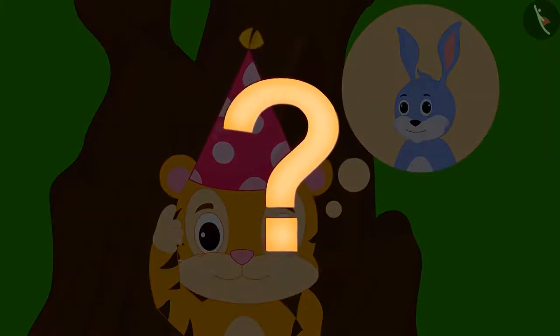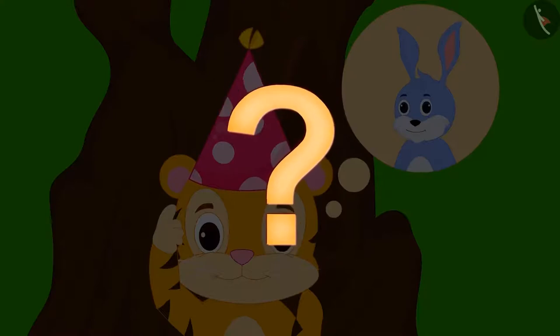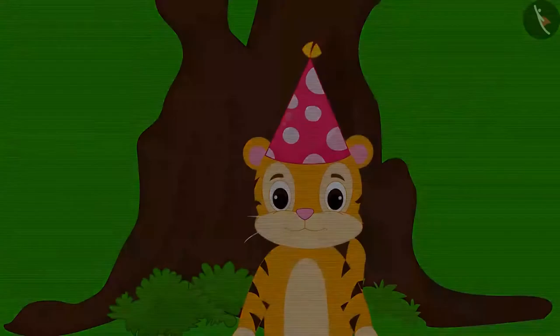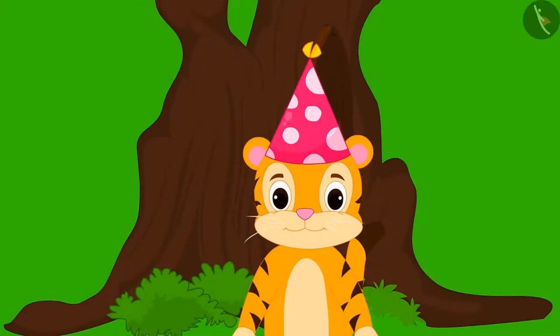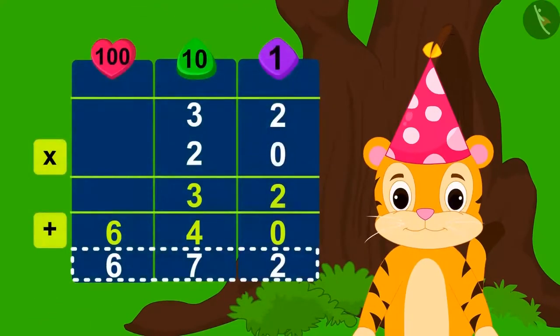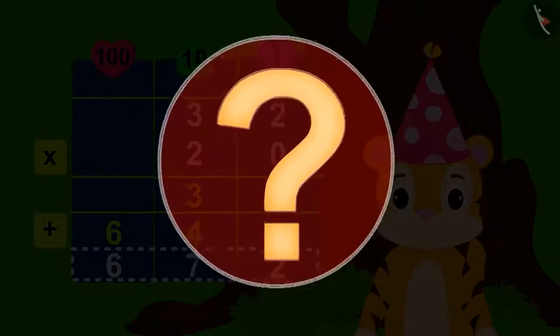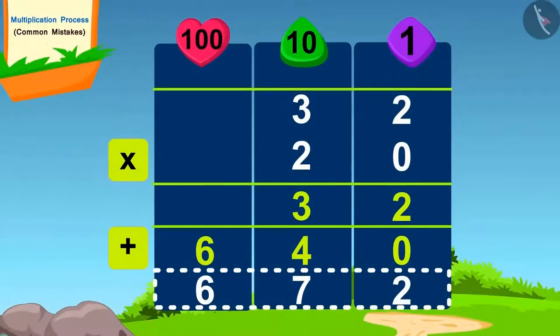Children, what do you think? Is Shere Khan right? Shere Khan is wrong. He made a mistake while multiplying. Can you tell me what was the mistake Shere Khan made? Shere Khan made a mistake while multiplying by zero.